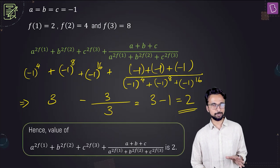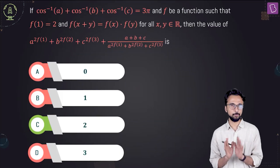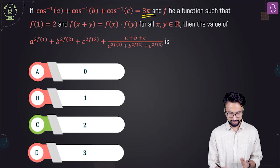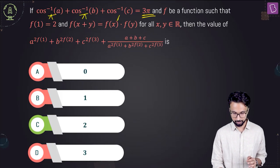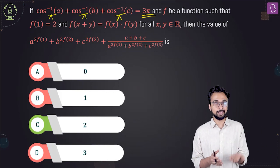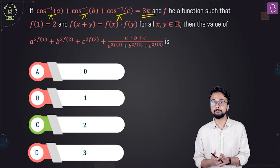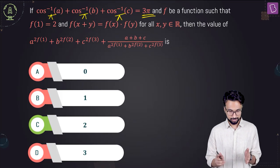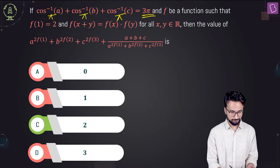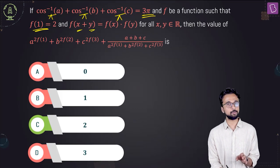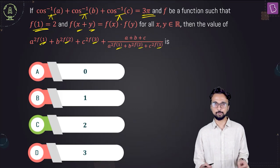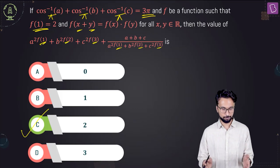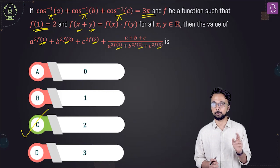This simplifies to 3 plus minus 3 over 3, which equals 3 minus 1 equals 2 — wait, rather: the numerator sum gives 3 and denominator gives 3, so combined the answer is 3 minus 1 equals 2. The key insight was realizing cos inverse x has a maximum of pi, forcing a, b, c to all equal minus 1. The final answer is option C, which is 2.